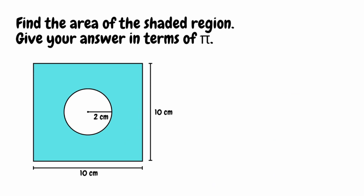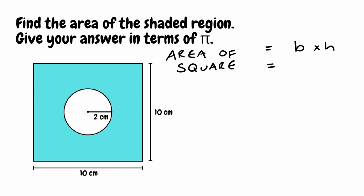For this next question we've got to find the area of the shaded region again and give our answer in terms of pi. This time our shaded region is essentially a square with a circle cut out of the middle. We know it's a square because if we look at the dimensions we've got 10 for both sides. To find the area of the entire square we're going to do base times height: 10 multiplied by 10, which gives us 100.